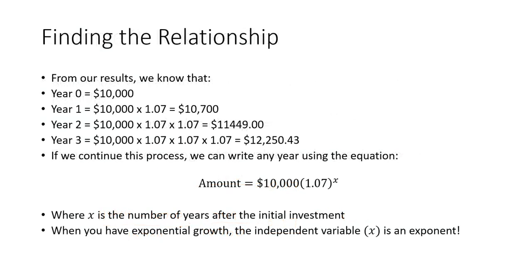So from the results, we know that the first year, you just have $10,000. The second year, you have $10,000 times 1.07. For year two, it's $10,000 times 1.07 times 1.07, and so on.